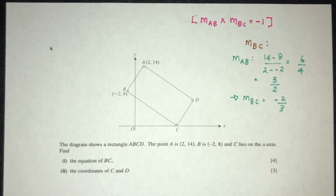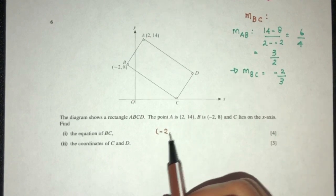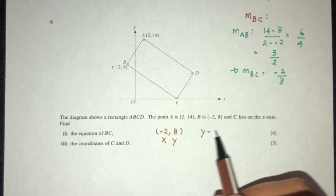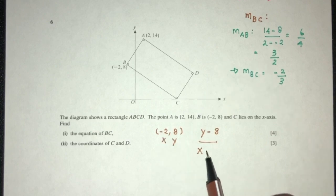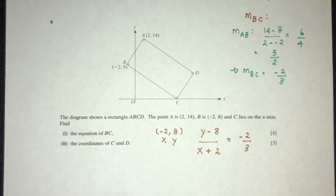Now we have the gradient, we have the passing point B, we can find the equation of BC. So the passing point is (-2, 8). That is the x value and the y value. So y minus 8 over x minus (-2), which is x plus 2, is equal to the gradient. Again, this is just a method that I use to find the equation of a straight line. If you have another method, you can always use yours, obviously.